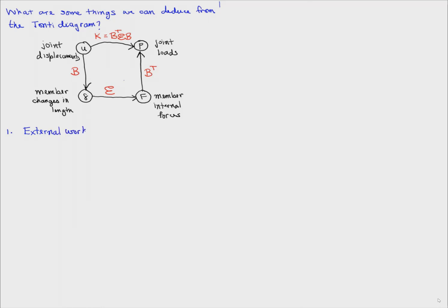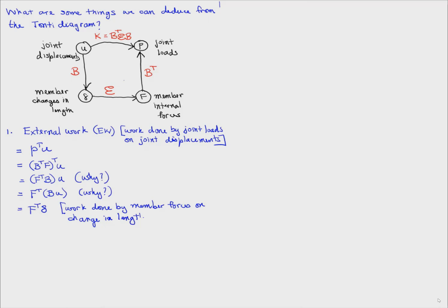First, let's consider external work. External work is the work done by the joint loads on the joint displacements. In terms of dot products, this is p transpose u. We can substitute p equals b transpose f, which then becomes f transpose b times u. Think about why that is. Then we can regroup the parenthesis, and we get f transpose delta. This is the work done by the member forces on the changes in length, which is internal work.